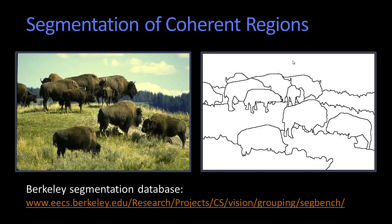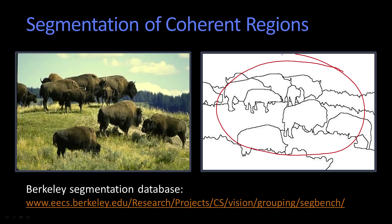There's this general intuition, and here we point to work by the folks at Berkeley — Jitendra Malik and his group — they really pushed hard on this. There's this general view that if I show you a picture, like this picture here on the left, which has these bison — that's what we call them in the States, or buffaloes — the idea is that I should be able to, if I handed that picture off to anybody and said draw a border around the different objects, you would get something that looks kind of like that.